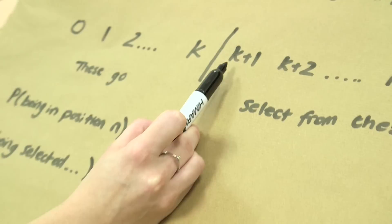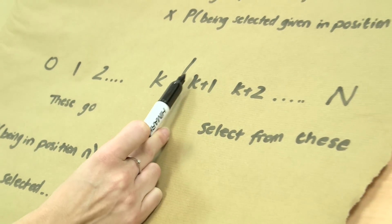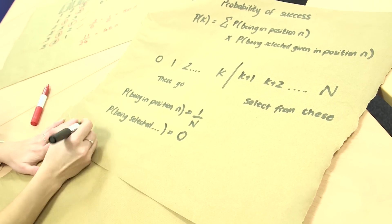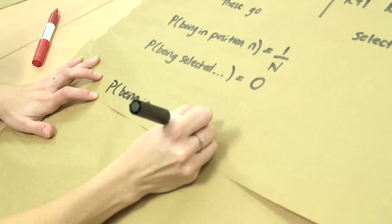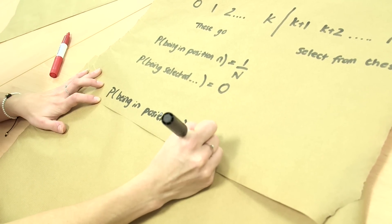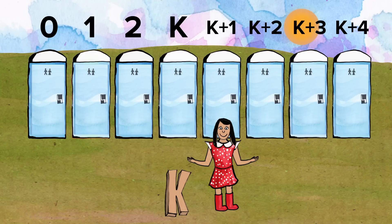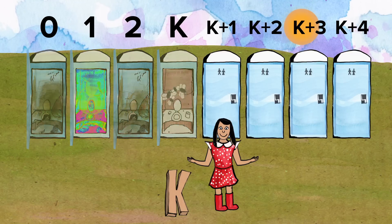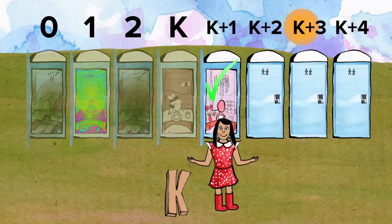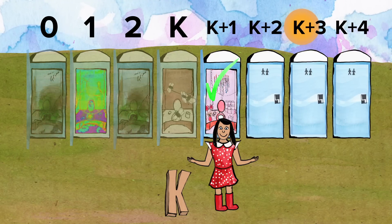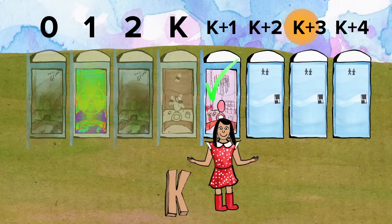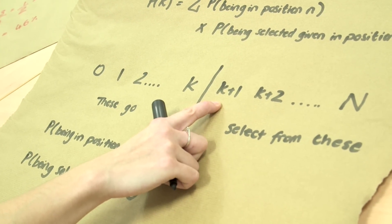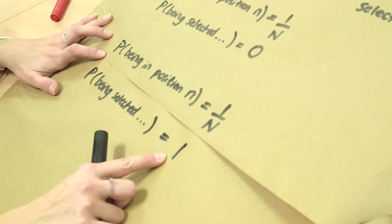So let's start taking the toilets after my rejected toilets, starting with K plus 1. I now start to compare with what has come before it. For K plus 1, the probability of being in position N is still 1 over N — there are still N toilets. If this is the best toilet compared to all those that I've rejected, I'm definitely going to select it, so the probability of selection is equal to 1. K is my ideal stopping point — I would choose the next best toilet and the probability of that happening is definitely 1.